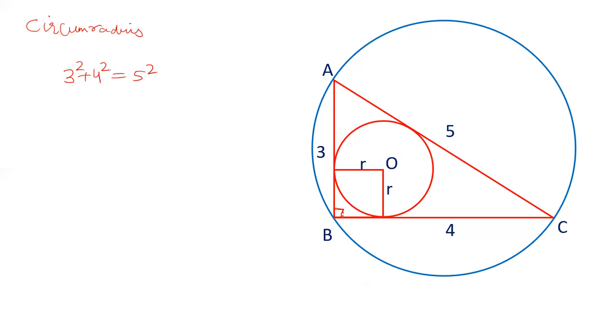In a right angle triangle if there is a circumcircle, that means the hypotenuse is the diameter. The reason is angle in semicircle is 90 degrees.